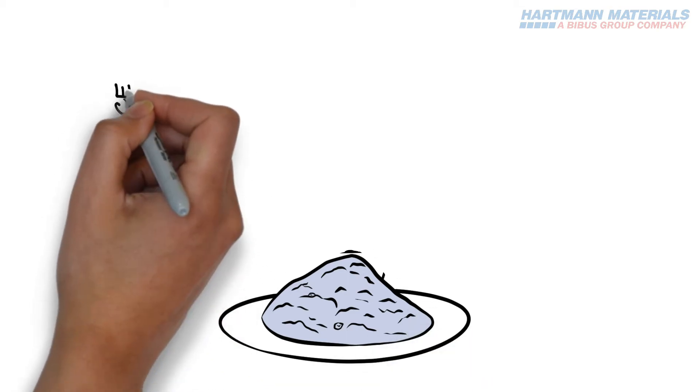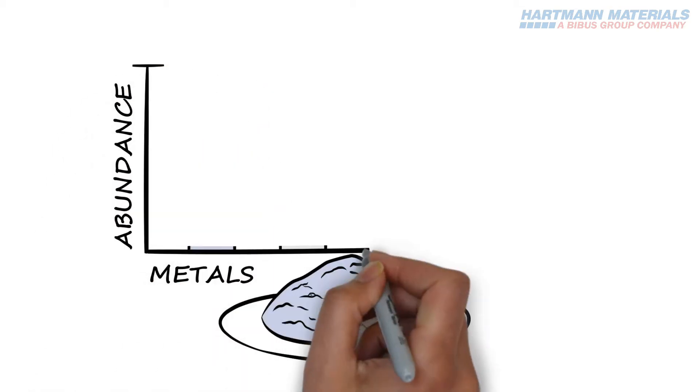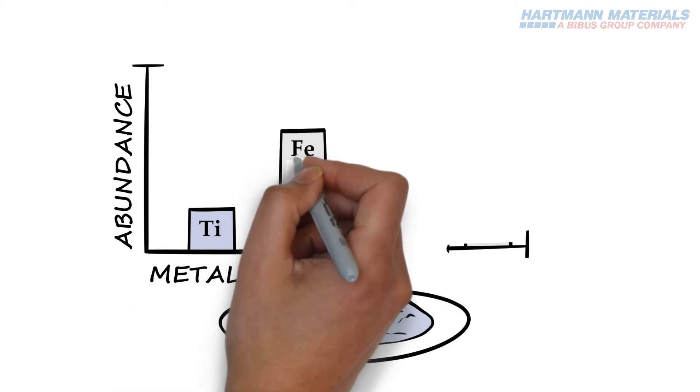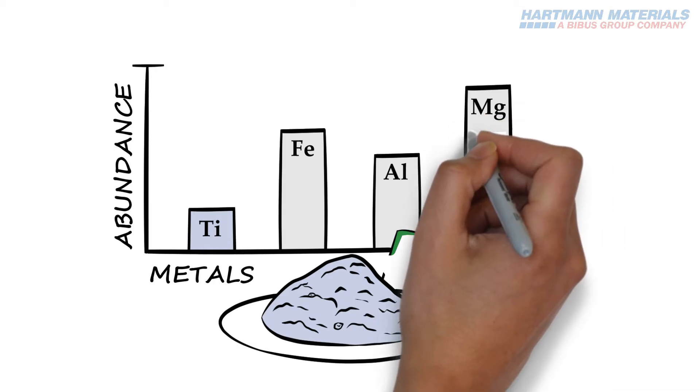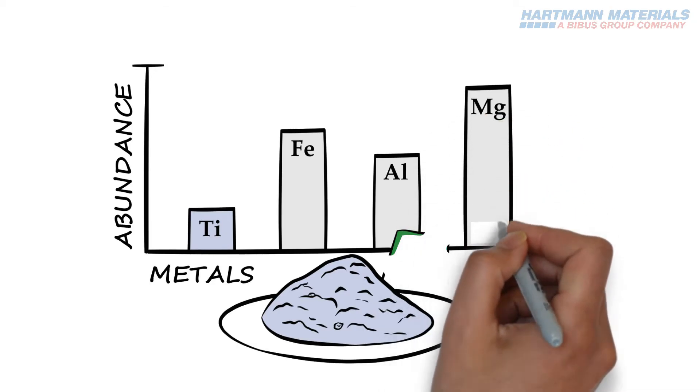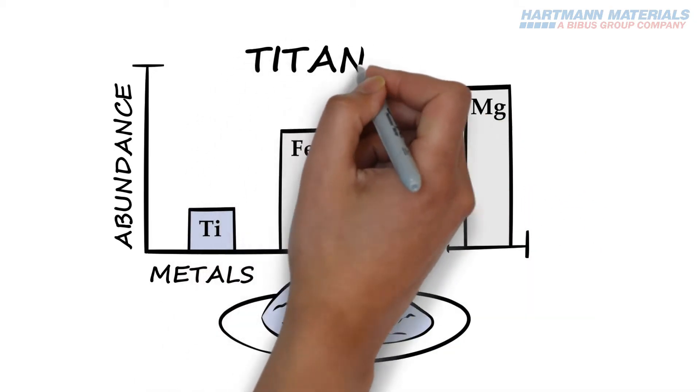Titanium is the fourth most abundant structural metal on Earth, exceeded only by iron, aluminum, and magnesium. Although plentiful, the relatively high cost of titanium derives from the highly specialist process of extracting titanium from its ore.